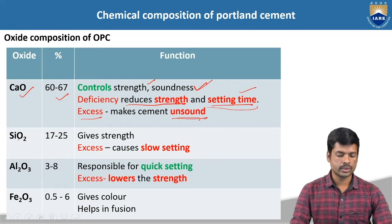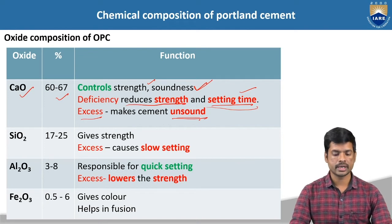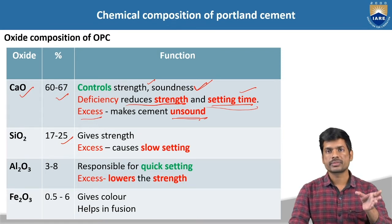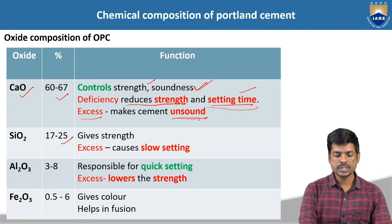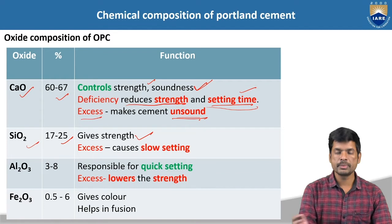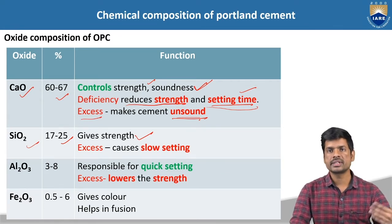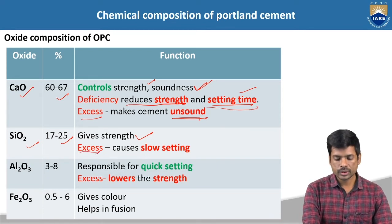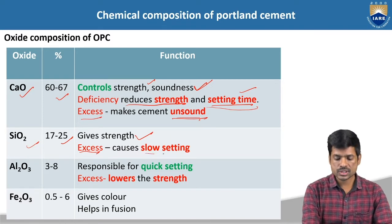Next chemical is silica dioxide, SiO2. The percentage of silica dioxide is 17 to 25%. We have to maintain that particular range. Due to the addition of this chemical, we are going to get strength — this particular silica dioxide is going to increase the strength and it is going to affect the strength of the cement. Suppose if you use excess amount of silica dioxide, it is going to cause slow setting.